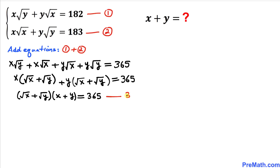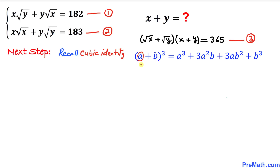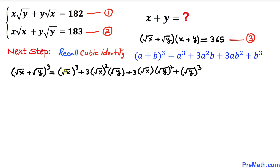We call this equation 3. Now let's recall the cubic identity: (a + b)³. We assume a = √x and b = √y, so we can write (√x + √y)³ equals (√x)³ plus 3 times (√x)² times √y plus 3 times √x times (√y)² plus (√y)³.